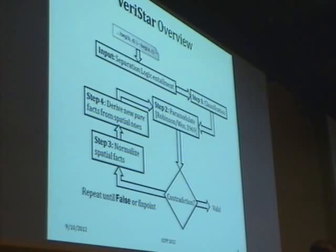In step three, we use that model to help guide the normalization of the spatial clauses in our clause set. Then we attempt to derive some new pure facts from the spatial ones by spatial inferences. We add these pure clauses back to our clause set and repeat this loop until we either derive false and prove that the entailment is valid, or we reach a fixed point on the set of pure clauses, in which case we've shown that the entailment is invalid. This algorithm is reputation complete. For any initial inconsistent set of clauses, we'll be able to derive false.